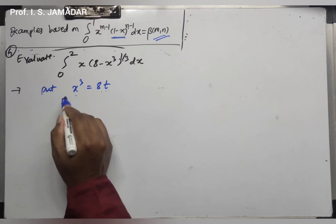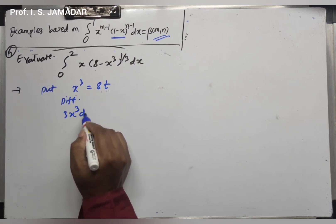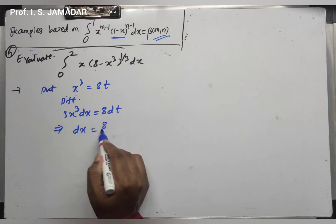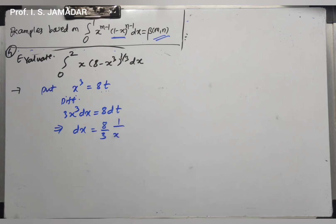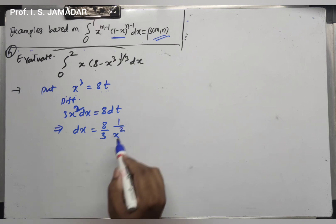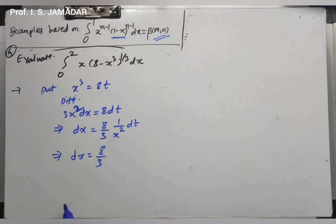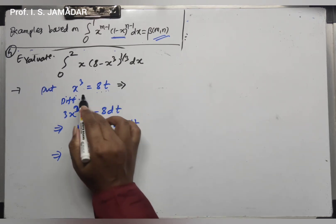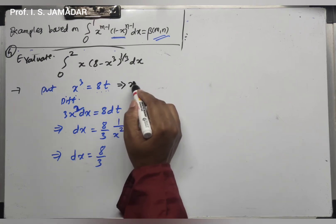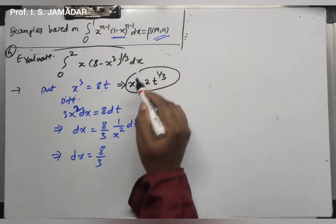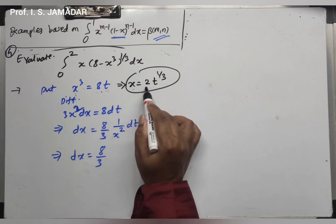From x³ = 8t, taking the cube root on both sides gives x = 2t^(1/3). Therefore x² = 4t^(2/3), so dx = (8/3) times (1/(4t^(2/3))) dt = (2/3) times t^(-2/3) dt. Alternatively, differentiating x = 2t^(1/3) directly gives dx = 2 times (1/3) times t^(1/3 - 1) dt = (2/3) t^(-2/3) dt, confirming the same result.